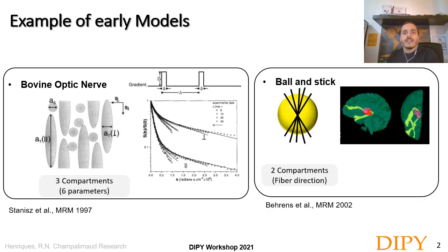Another early model is the Ballistic model. This model can be fitted to a much smaller amount of data, but due to its simplicity, it is basically used for estimating directional information for probabilistic tractography approaches, rather than microstructure properties per se.